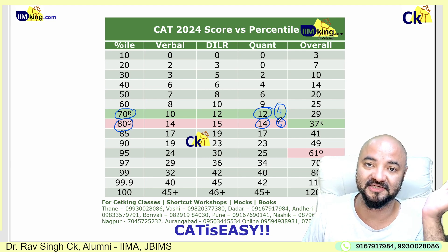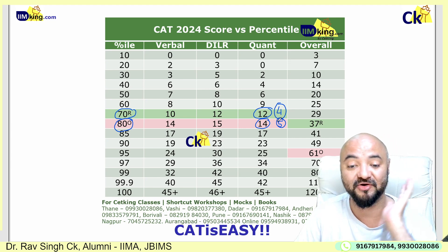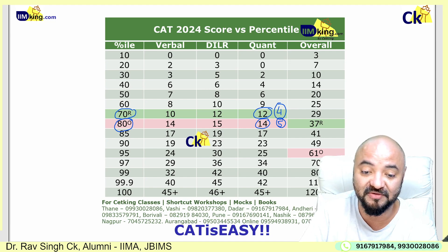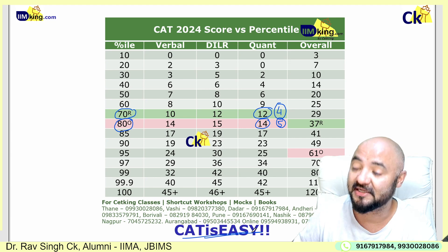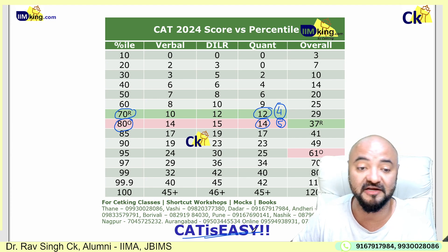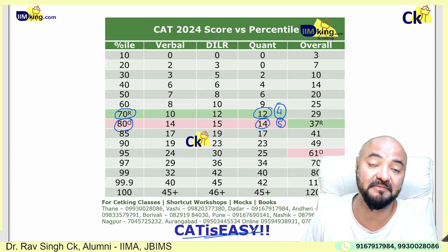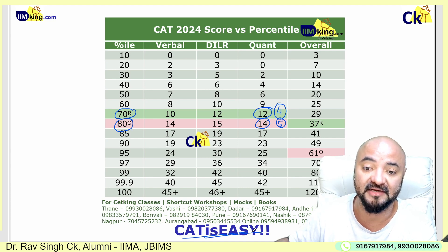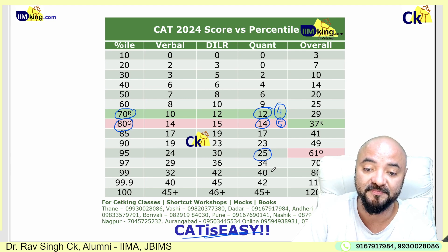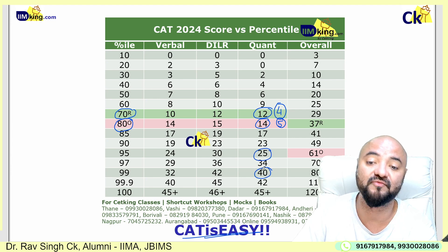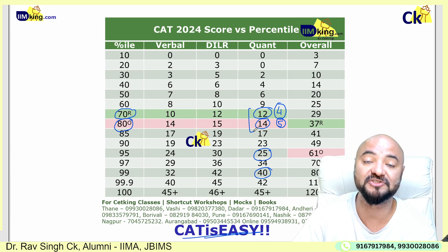If you get 5 questions correct, at least the cutoff is being cleared and you'll get a call — not one call, multiple calls. That's why I'm saying CAT is easy. After today, stop thinking CAT is difficult. This is the minimum target. Once I clear the minimum target, I'll increase it to 25, then to 40 — but minimum you have to get 4 to 5 questions correct.